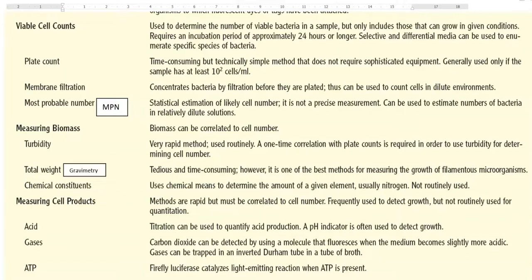The next one is total weight measurement or gravimetry. It is a tedious as well as time consuming method. However, it is one of the best method to be used for filamentous group of microorganism, mainly to measure the fungal biomass.